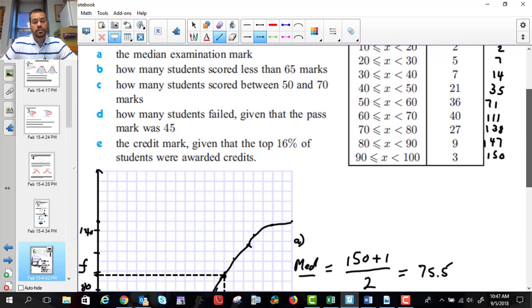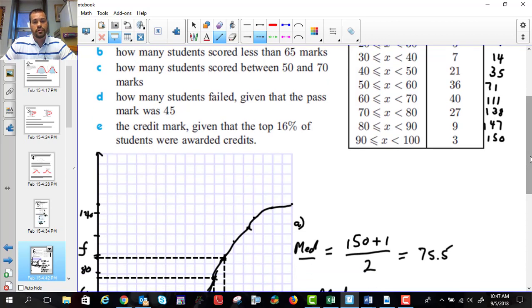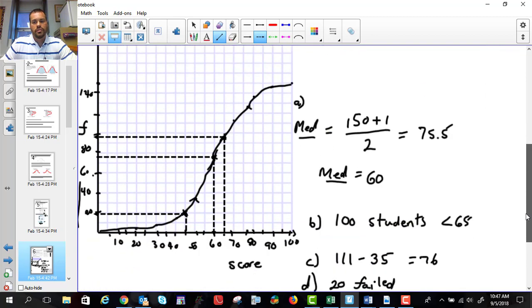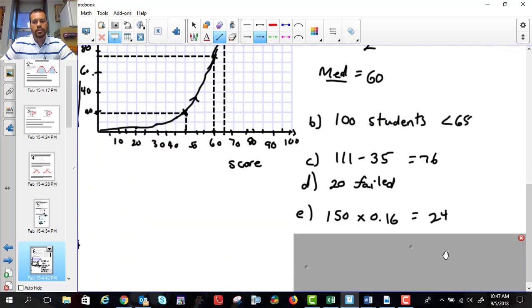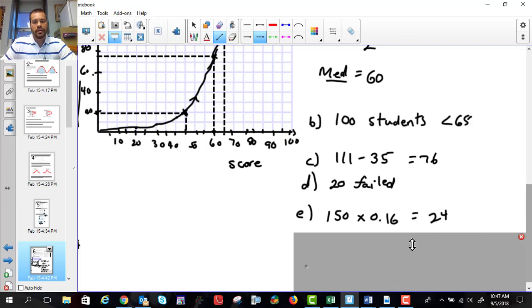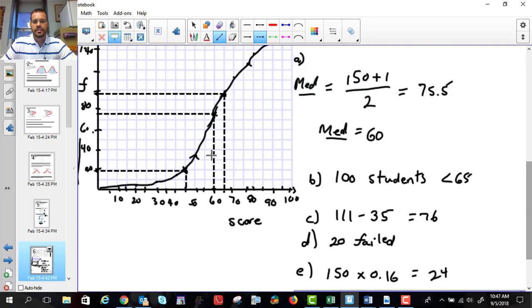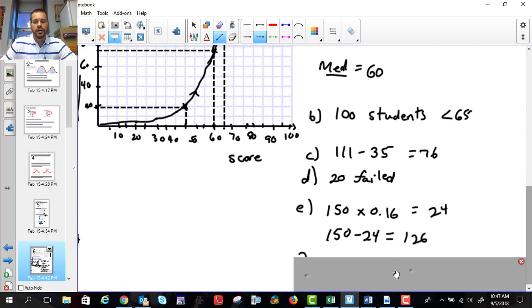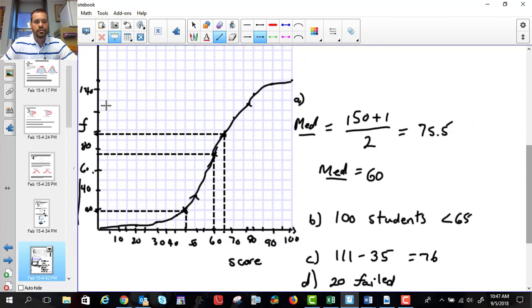And then finally, it says the credit mark given the top 16% of students were awarded credit. So what we have to do is figure out what's the top 16%. And we do that by taking 150 and multiplying it by 0.16, that gives me 24. And then once I have that number, I have to say, okay, my graph doesn't give me greater than numbers. It gives me less than numbers. So I take 150 minus 24 and get 126, and I go to 126.